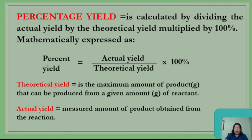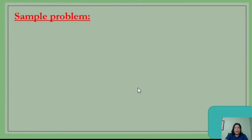Usually, in the given worded problem, the theoretical yield is the one that is being computed. The actual yield is already given in your worded problem. So don't get confused about which value to use when computing for step 1.